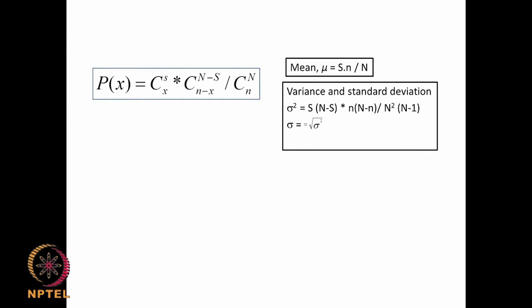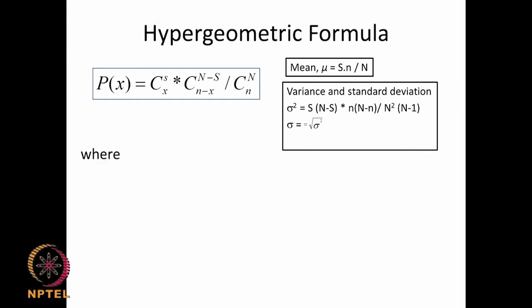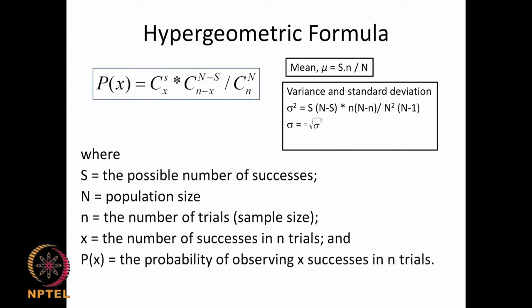Hypergeometric is a distribution which looks at situations where the population is not very large — the sample size is almost in the ballpark figure of the population, unlike a normal distribution where the population is very large, almost infinite. Here the sample is also reasonably large, comparable to the population. The probability distribution is given by C(S,x) · C(N−S, n−x) / C(N,n), where capital N is the population, n is the sample size, x is the number of successes in the trial, and S is the maximum possible number of successes.